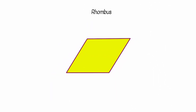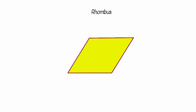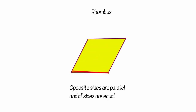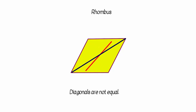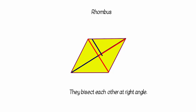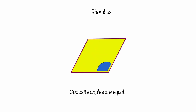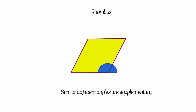In a parallelogram, if all the four sides become equal, what we get is a rhombus. A rhombus is an equilateral parallelogram. Opposite sides are parallel and all four sides are equal. Diagonals are not equal, but they bisect each other at right angle. Opposite angles are equal, and the sum of any two adjacent angles is 180 degrees.